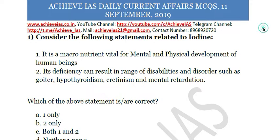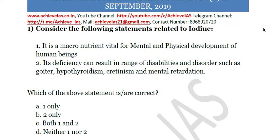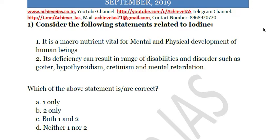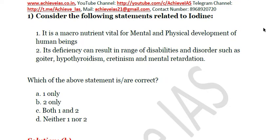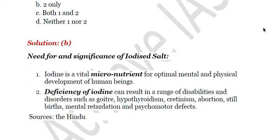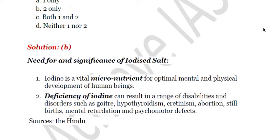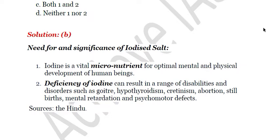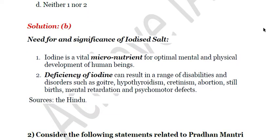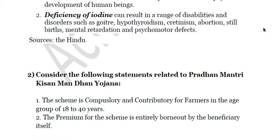The first question: consider the following statements related to iodine. First, it is a macro nutrient vital for mental and physical development of human beings. Second, its deficiency can result in a range of disabilities and disorders such as goiter, hypothyroidism, cretinism, and mental retardation. The correct answer is second only, because the first is incorrect — iodine is a micro nutrient, not a macro nutrient. Its deficiency can lead to goiter, hypothyroidism, cretinism, abortion, stillbirths, mental retardation, and psychomotor defects.